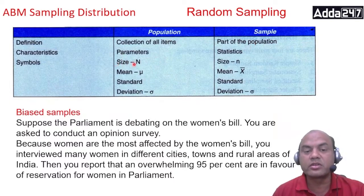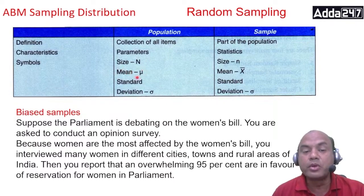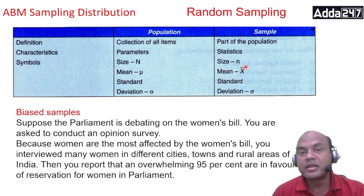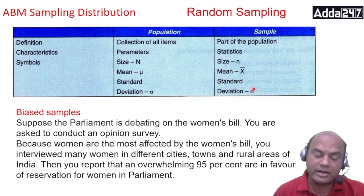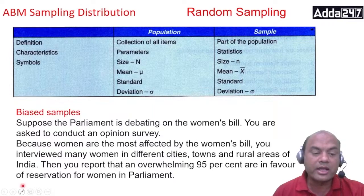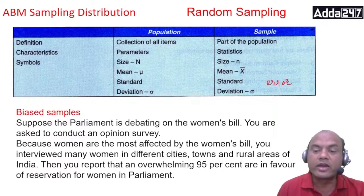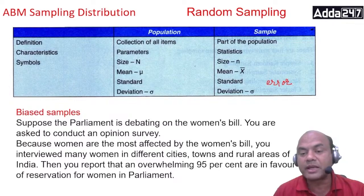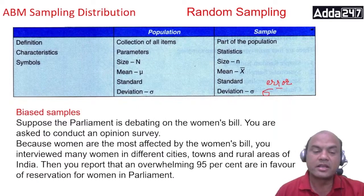Size is always given as capital N for population and small n for sample. Mean of population is shown as mu (μ), and mean of sample is always shown as x-bar. Standard deviation is given as sigma (σ) for population. One more thing: whenever I take anything for the sample, it is generally called standard error — we write it as sigma-dash (σ'). So standard deviation is for population and standard error is for sample.